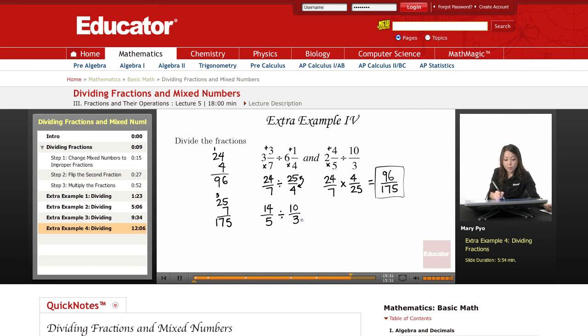So I'm going to flip the second fraction, so that the top number and my bottom number switch positions. And then that changes this division to multiplication. So 14 over 5 times 3 over 10.